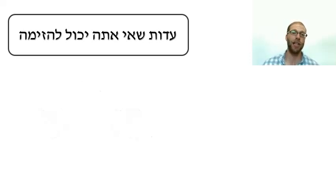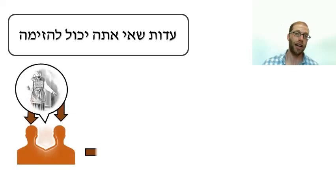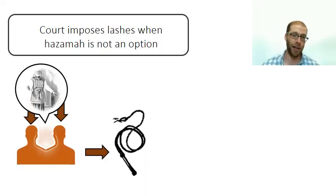A classic case occurs when two witnesses who are kohanim try to discredit the status of another Kohen and they cannot receive the same punishment they try to impose on that fellow Kohen for reasons that we've explored previously.